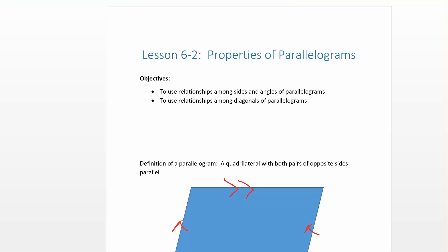That's lesson 6-2 on Properties of Parallelograms. We learned about sides, angles, and diagonals of parallelograms. Remember the key theorems: opposite sides of a parallelogram are always congruent, opposite angles are always congruent, the diagonals bisect each other, and consecutive angles are supplementary. Make sure you get those theorems into your notebooks.